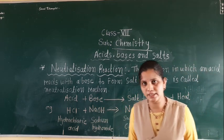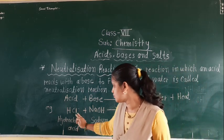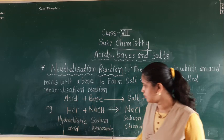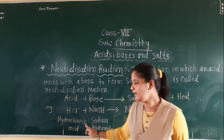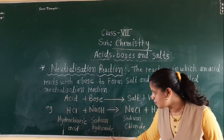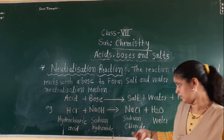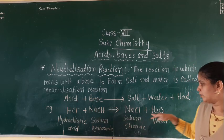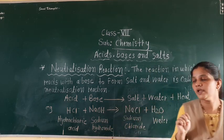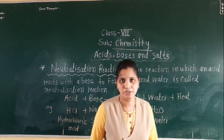I will give one example: HCl, that is hydrochloric acid. When HCl reacts with NaOH — sodium hydroxide — HCl is the acid and NaOH is the base. When this acid reacts with this base, it forms NaCl, that is sodium chloride, and water. This reaction is known as a neutralization reaction.